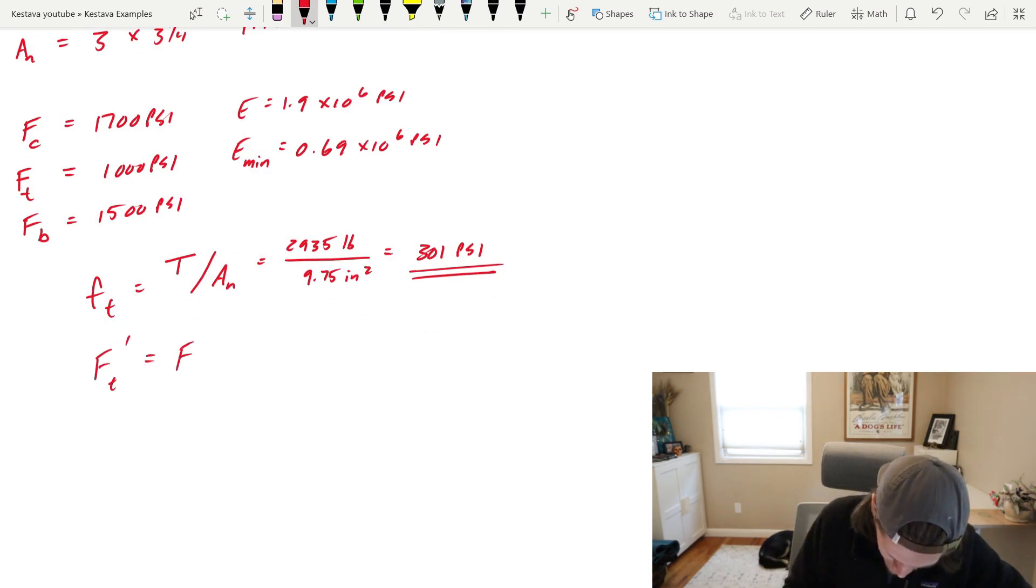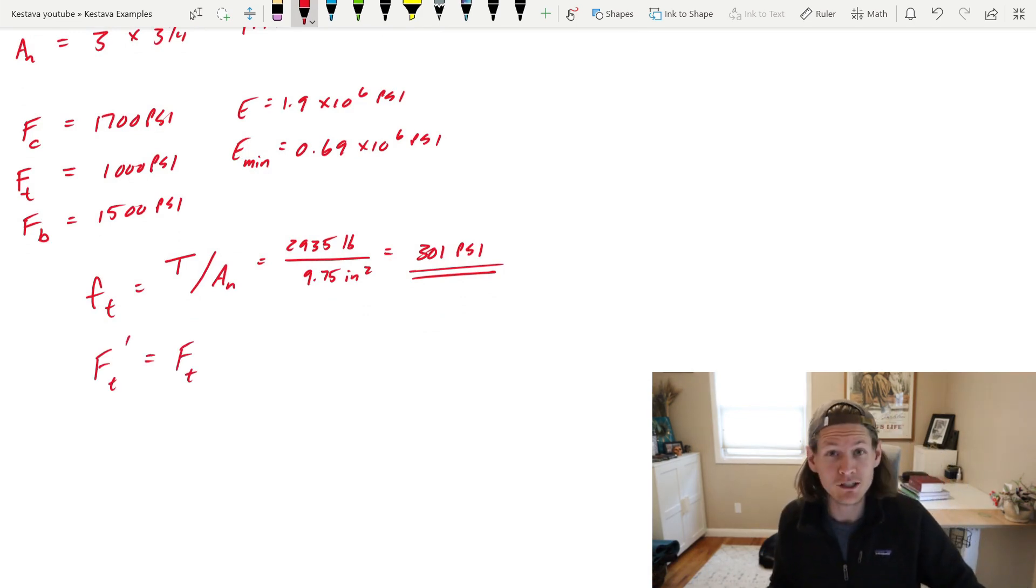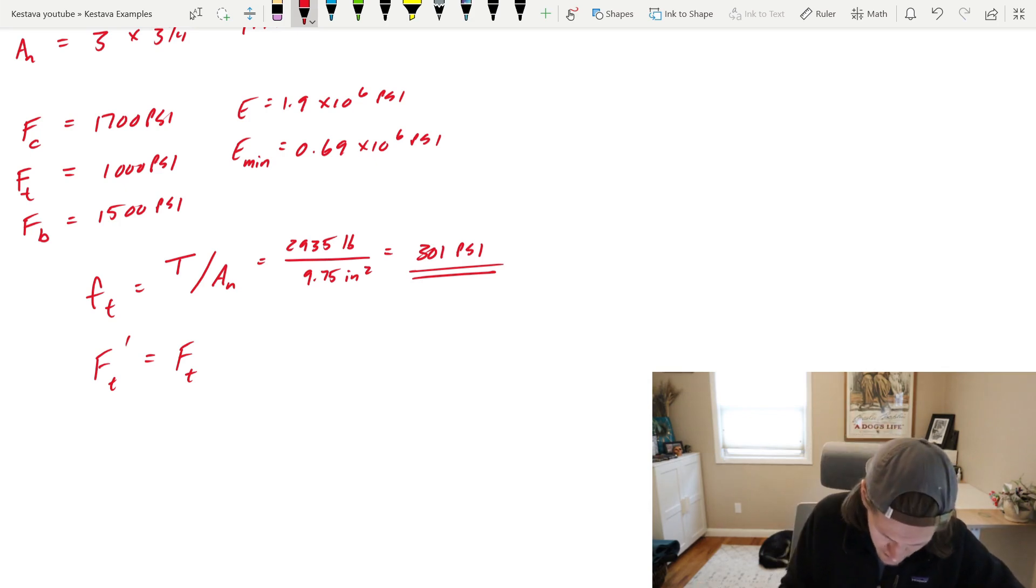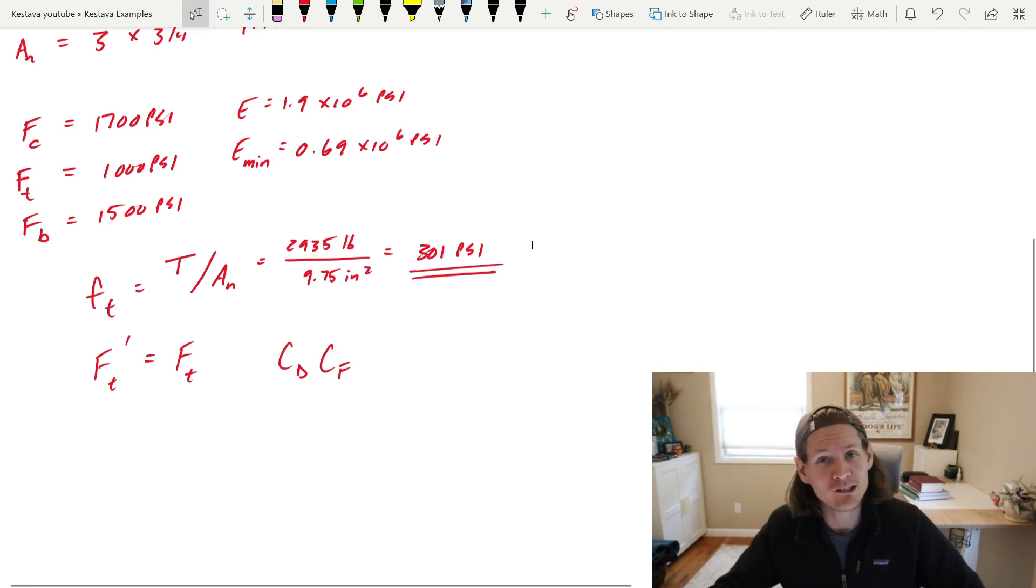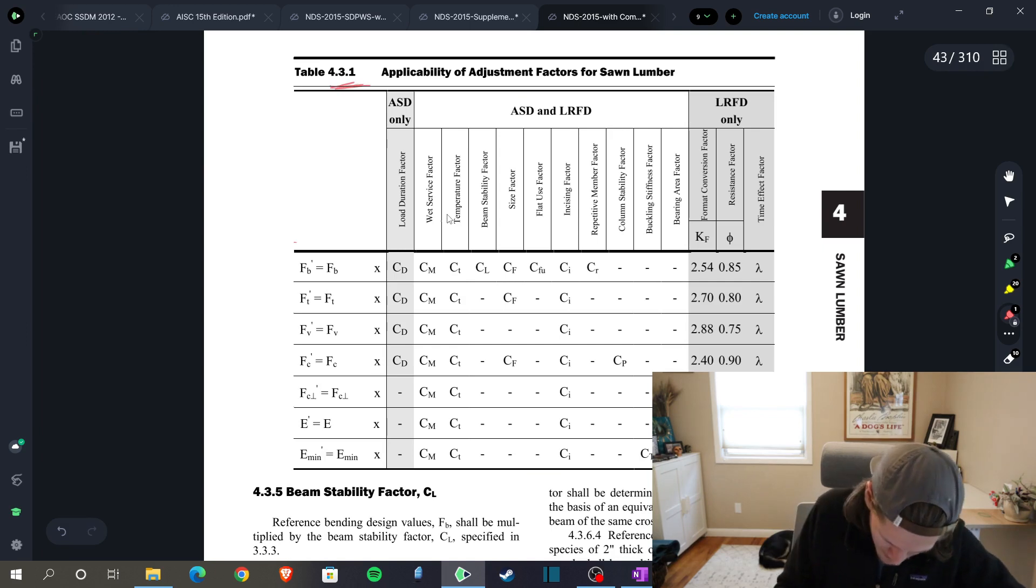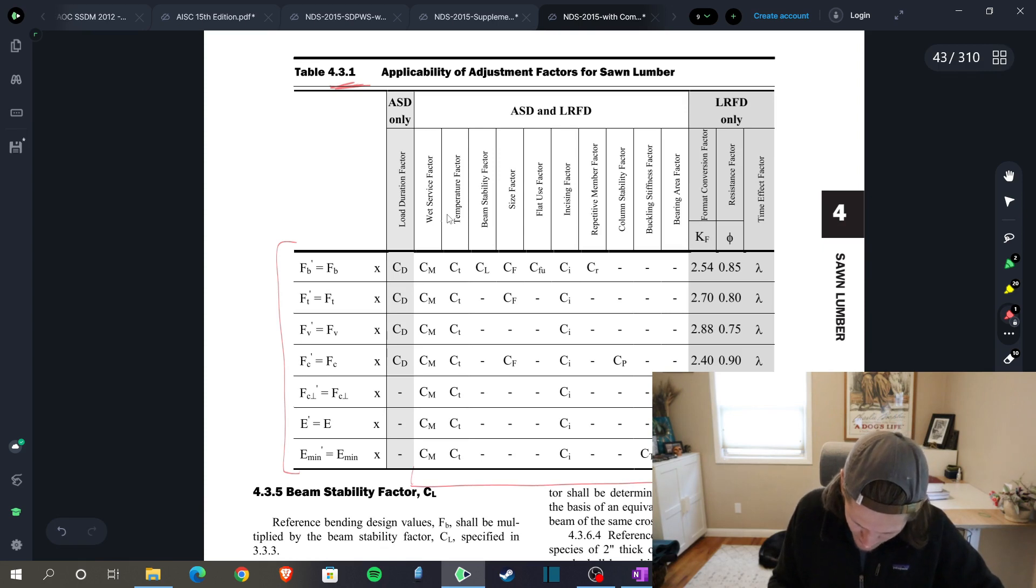But now what about our capacity? FT prime is equal to FT times our adjustment factors. But which ones do we use? In this case, we're going to be using just CD and CF. And I know those because they're specified in the NDS. I'll show you the table very quickly. Table 4.3.1, this is where all the magic happens. So whatever you're trying to design, they then tell you what adjustment factors you need to plop in for your design and account for.